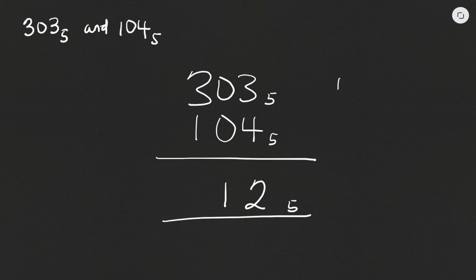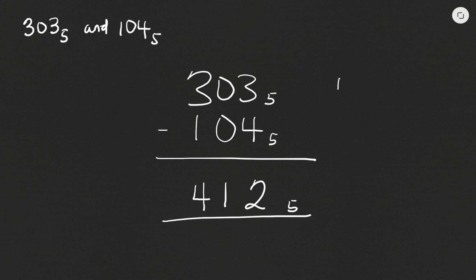I come to the middle: zero plus zero is zero, plus the one that we carried, makes one. Then: three plus one is four — it's not five or above, so I write down four. So 303 base five plus 104 base five gives 412 base five. Thank you so much for watching — this is how we add in number bases. Thank you once again and I'll see you in the next video.